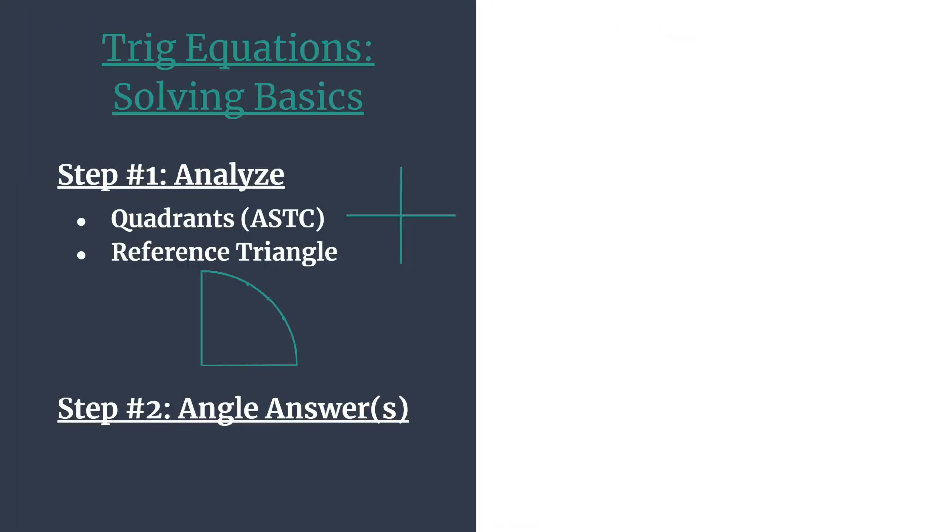So let's break down our process. In step 1, we'll analyze. We'll figure out which quadrants our angles will be in, and we'll also use a reference triangle to determine the reference angle for these angles in each of the quadrants we chose. And step 2 is all about putting those two things together and stating your answers.